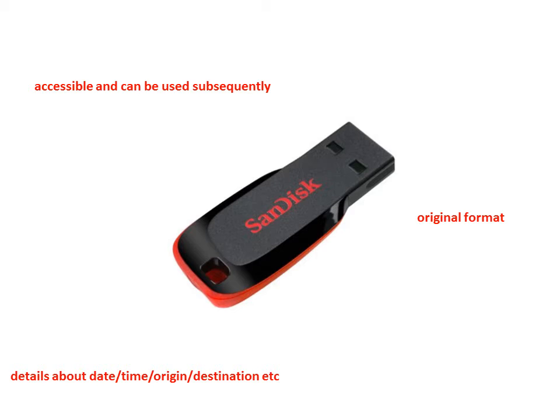So these are the three provisions for retention to be valid in electronic form: it should be accessible, it should be in original format, and it should have certain details.